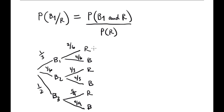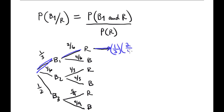The only possibility to combine the two conditions B1 and red is this branch on the tree. It is the multiplication of 1 over 3 times 2 over 6, which equals 1 over 9. The denominator was computed in the first question.